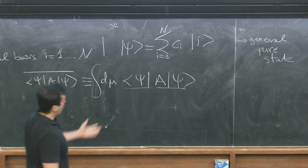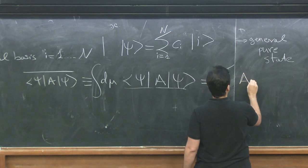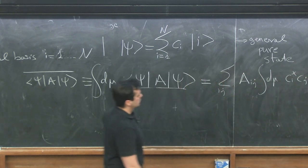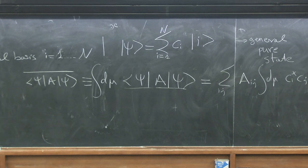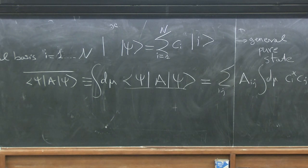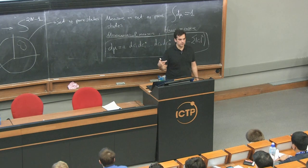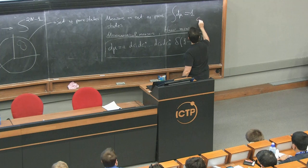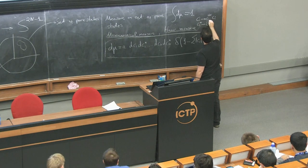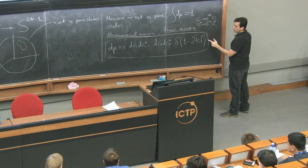To evaluate this, we introduce the matrix elements A_{ij} of the operator and write the average as Σ_{ij} A_{ij} · ∫dμ c_i* c_j. Now, this measure is invariant under independent rotations of the c's by phases: c_i → e^{iθ_i} c_i. This implies the integral ∫dμ c_i* c_j is nonzero only if i = j, because otherwise you can rotate one index by a phase the measure won't see, forcing the integral to zero.